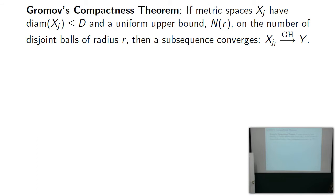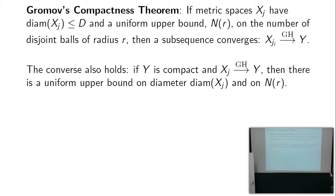Gromov's compactness theorem for metric spaces: if the spaces X_j have a uniform diameter bound and a uniform bound on the number of disjoint balls of radius R, then a subsequence converges in the Gromov-Hausdorff sense. If the X_j's are compact, the limit Y will be compact. The converse also holds: if the limit space Y is compact and X_j's converge to Y, then there's a uniform bound on the diameters and on the number of balls of any given radius. Sizes of balls and diameters are preserved very well under Gromov-Hausdorff.